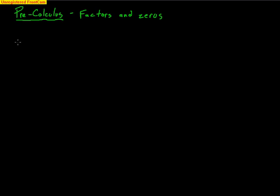Let's talk about some problems we've already covered. If x equals 3 is a zero, that means this particular value makes a function zero. And that means its factor is x minus 3. This is linear — we like things to be linear. We like linear factors.